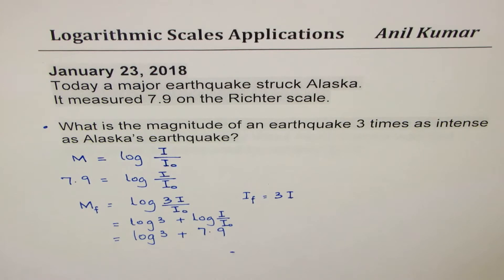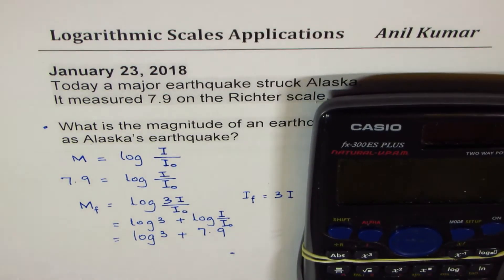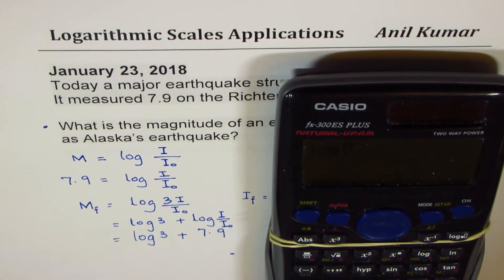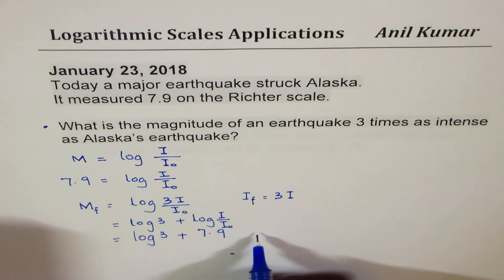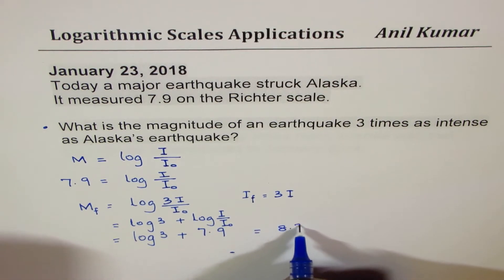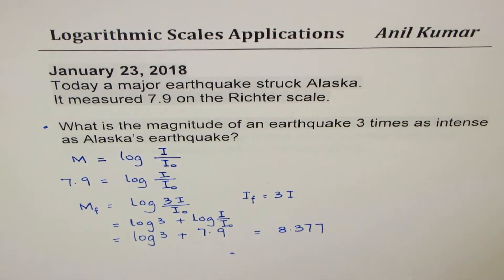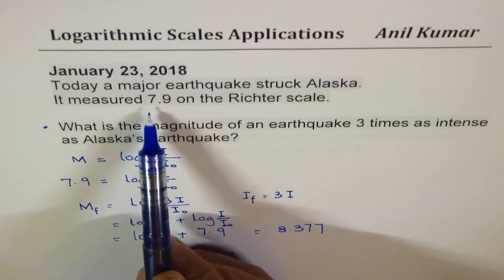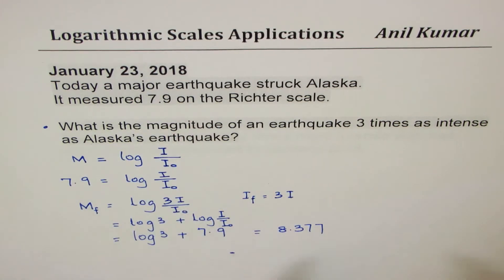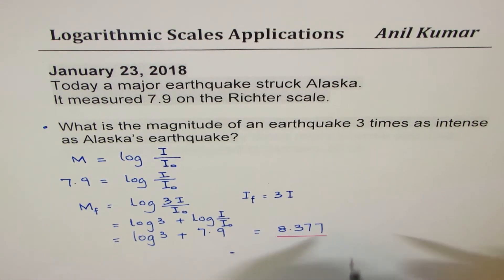Let's use the calculator. Log base 10 of 3 plus 7.9 equals 8.377. So an earthquake which is three times as intense as today's earthquake will measure 8.377 on the Richter scale.